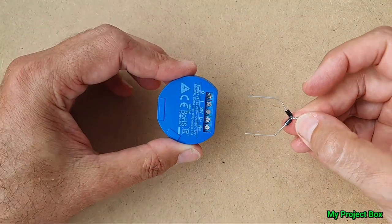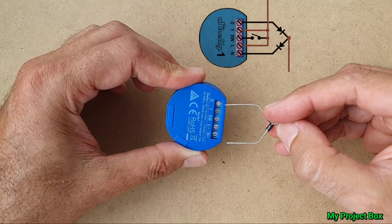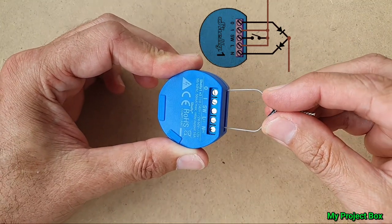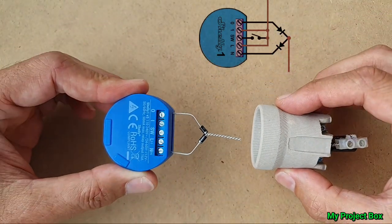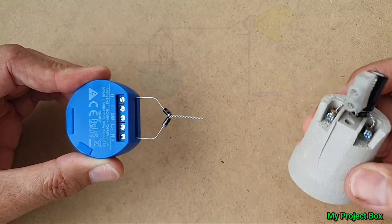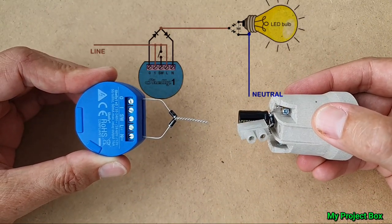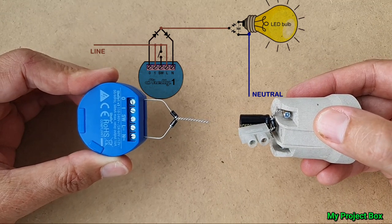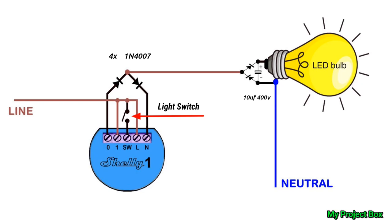These two diodes with the one pointing towards the neutral and the one coming out from the switch life of your Shelly, they will essentially be going in like that. So that's our complete no neutral bypass circuit for our Shelly one. Let's look at the wiring diagram and see if we can build up a test circuit to see if everything works exactly like the test circuit is supposed to work.